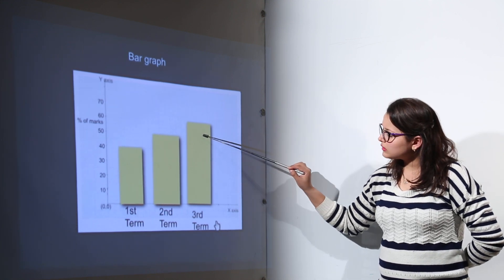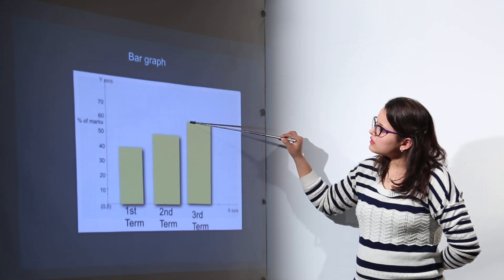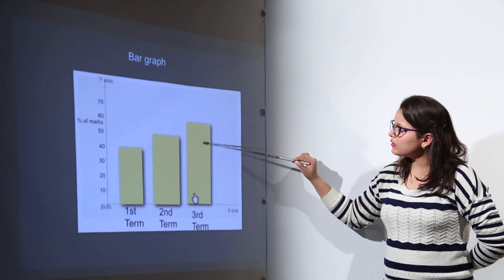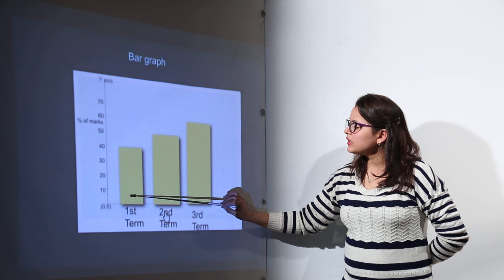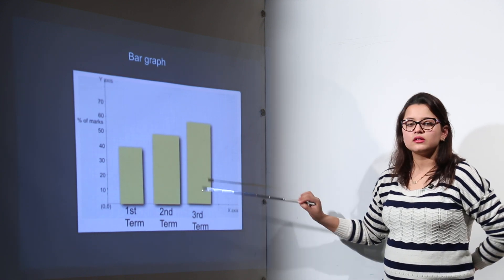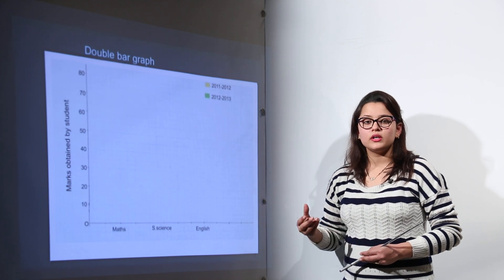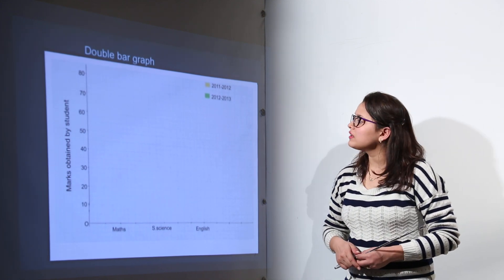Now moving on to the third part. In the third part, we can see the student has reached 60% of the criteria. Now here the third graph is representing that the student has improved compared to first and second term. So this is how we can make the comparison of any quantity, the comparison between any categories using the bar graph representation.